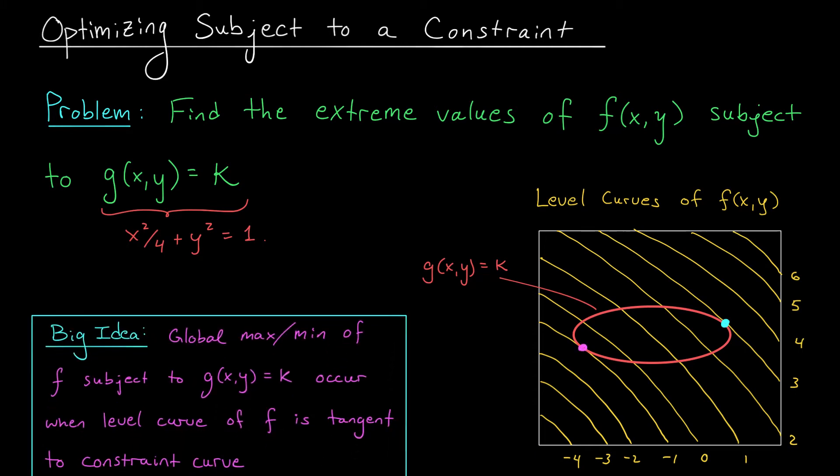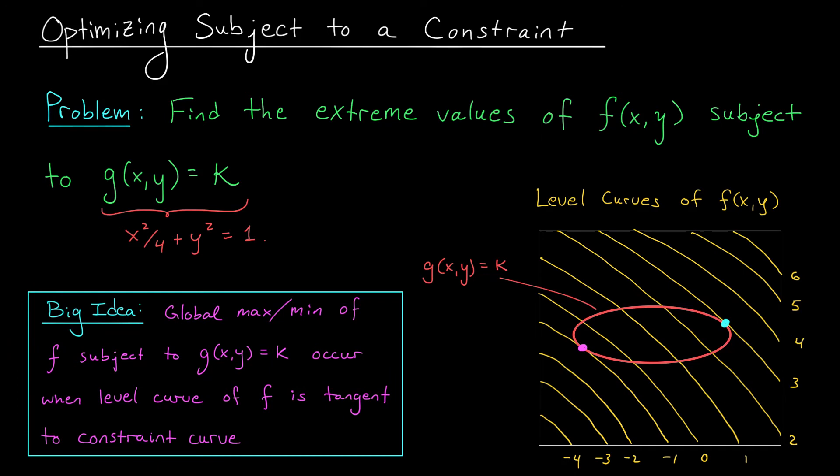This, folks, is the big idea behind the method of Lagrange. The global max and min of a function f, subject to a constraint g(x,y) equals k, will occur at points where the level curves of f are just tangent to the constraint curve. This would be a great time to pause the video and make sure you really understood everything that just took place.